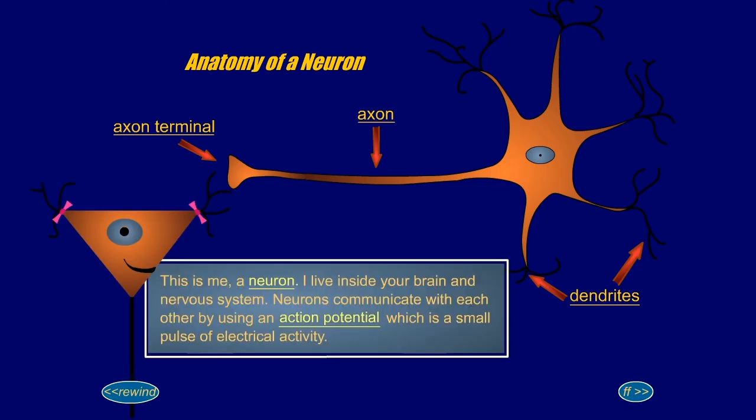This is me, a neuron. I live inside your brain and nervous system. Neurons communicate with each other by using an action potential, which is a small pulse of electrical activity.